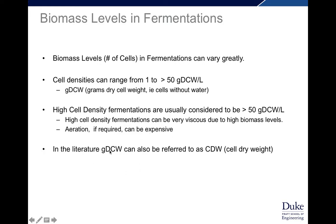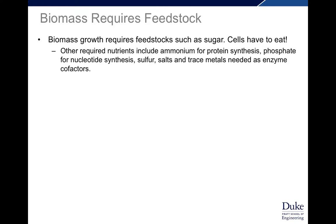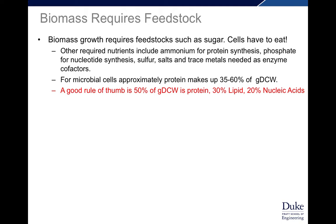In the literature, grams dry cell weight may also be referred to as cell dry weight or gram cell dry weight — they're basically equivalent. These cells require feedstock: biomass growth requires sugars or other feedstocks so that cells can eat, multiply, divide, and produce products. Other required nutrients besides sugars include ammonium for protein synthesis, phosphate for nucleotide synthesis, sulfur salts, trace metals for enzymes and cofactors. For microbial cells, approximately 35–60% of the dry cell weight is protein. A good rule of thumb is that 50% of the gram dry cell weight is protein, 30% is lipid, and 20% is nucleic acids.